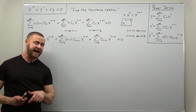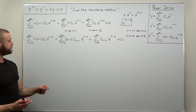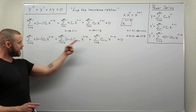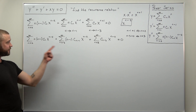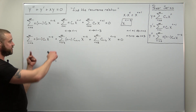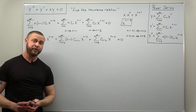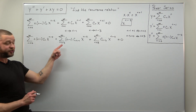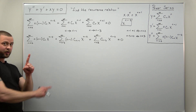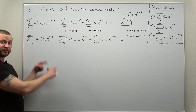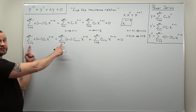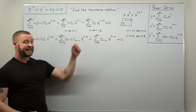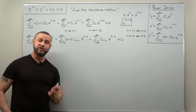We now have x to the n minus two everywhere, which will allow us to add the coefficients to get the recurrence relation. However, what prevents us from combining all three power series into one right away is the different starting indices — n equals two for the first two series, but n equals three for the third. We can handle this by writing out the first terms individually.